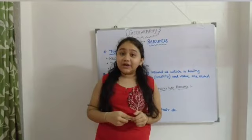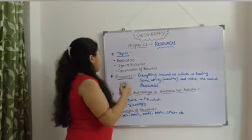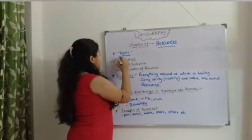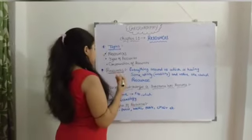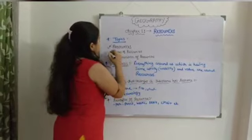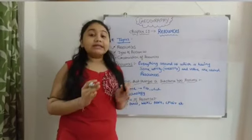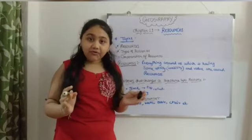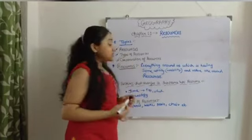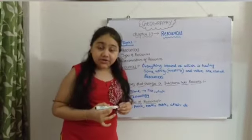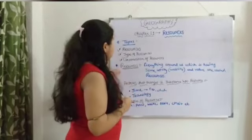First, let us know what topics we are going to learn in this chapter. We have to know: what are resources — the definition of resources. Then we have different types of resources, that is the classification of resources. And the third topic is conservation of resources, which is very important.